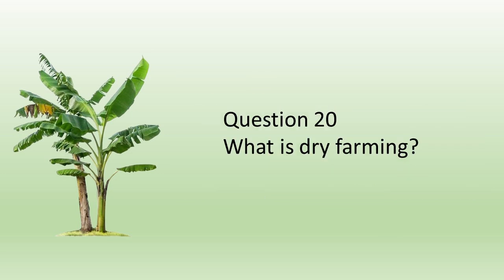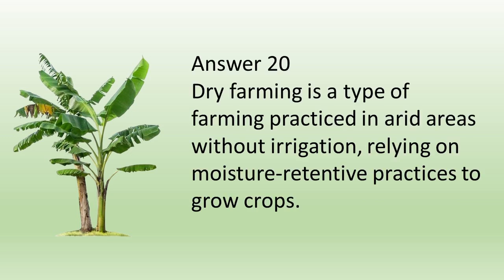Question number twenty: What is dry farming? Answer: Dry farming is a type of farming practiced in arid areas without irrigation, relying on moisture-retentive practices to grow crops.